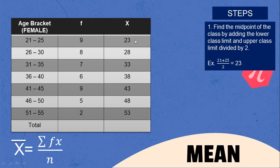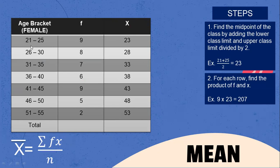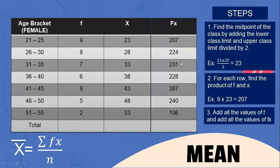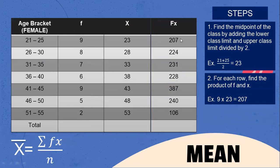Those are the midpoint values. Next step: for each row, find the product of F and X. So we calculate 9 multiplied by 23, 8 multiplied by 28, 7 multiplied by 33, 6 multiplied by 38, 9 multiplied by 43, 5 multiplied by 48, and 2 multiplied by 53, which gives 106.